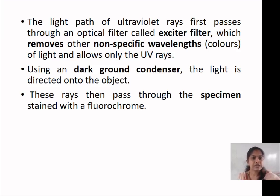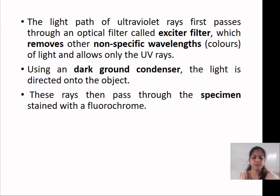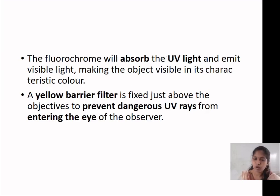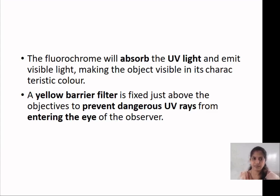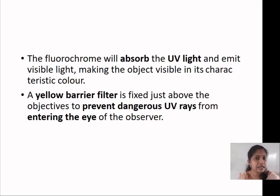Using a darkground condenser, the light is directed onto the object. This ray then passes through the specimen stained with the fluorochrome. The fluorochrome will absorb the ultraviolet light and emit visible light, making the object visible in its characteristic fluorescent color.